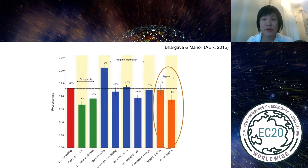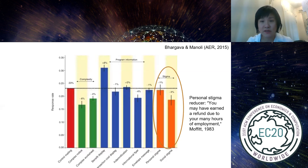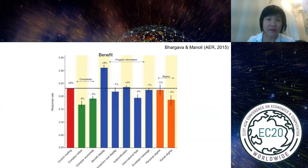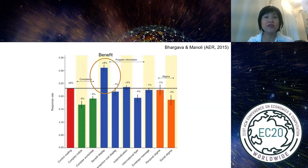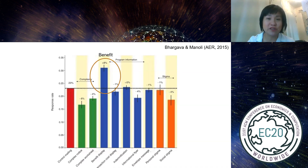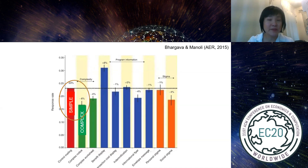Some versions played with stigma reduction — saying 'you have earned a refund due to your hours of employment.' Others emphasized benefits upfront, showing how much the filer could receive. What's striking is that the complex form significantly reduces take-up compared to the simple form. Using a simpler form could deliver substantially more money to eligible recipients.